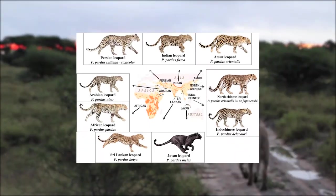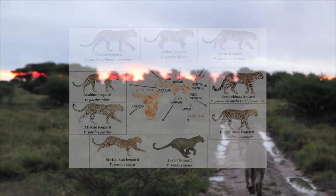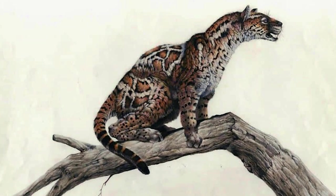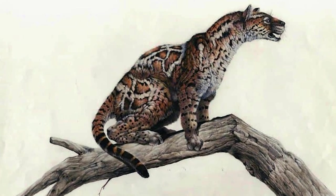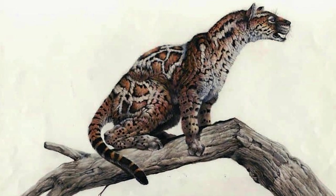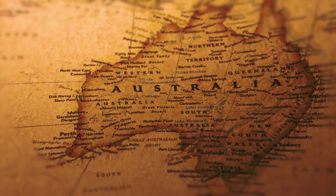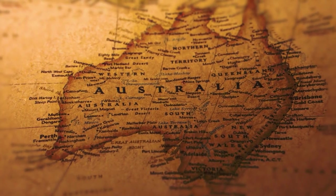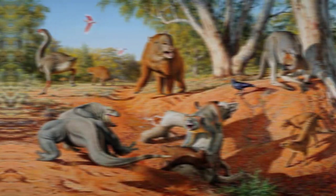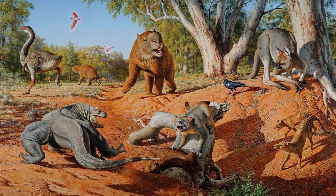The Panthera genus, to which modern lions belong, diverged from the Felidae millions of years ago, likely originating in Central Asia. There is debate about exactly when this divergence occurred, but it could have been as early as 11 million years ago, or as recently as 1 million years ago. Either way, it was long after Australia split from Gondwana 99 million years ago — a reason for its unique wildlife, and a reason why lions don't live there.